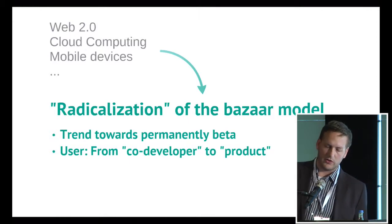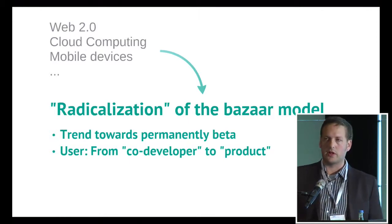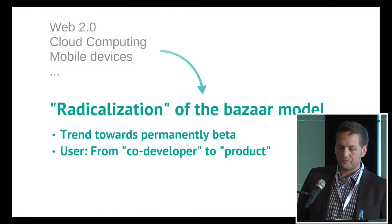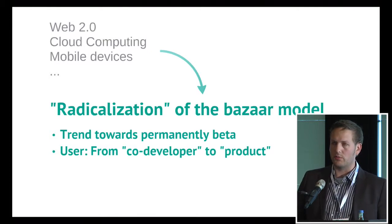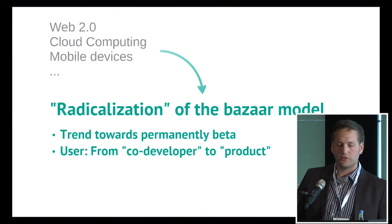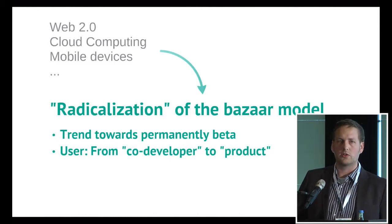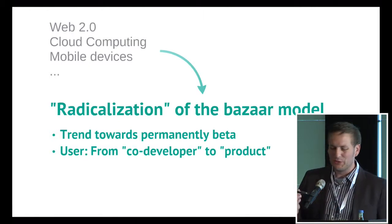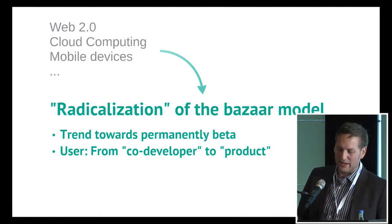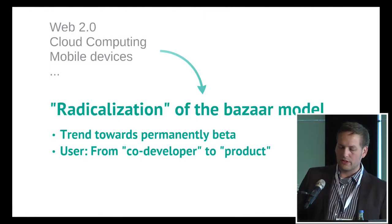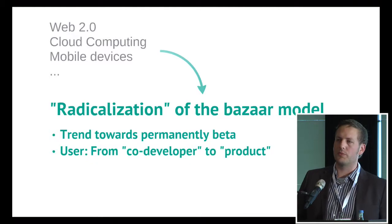Raymond, and also authors like O'Reilly, referred to the user as a co-developer — so there's this participatory notion. And now, as we all know, if we look at services like Google, the user very much becomes a commodity, becomes a product.